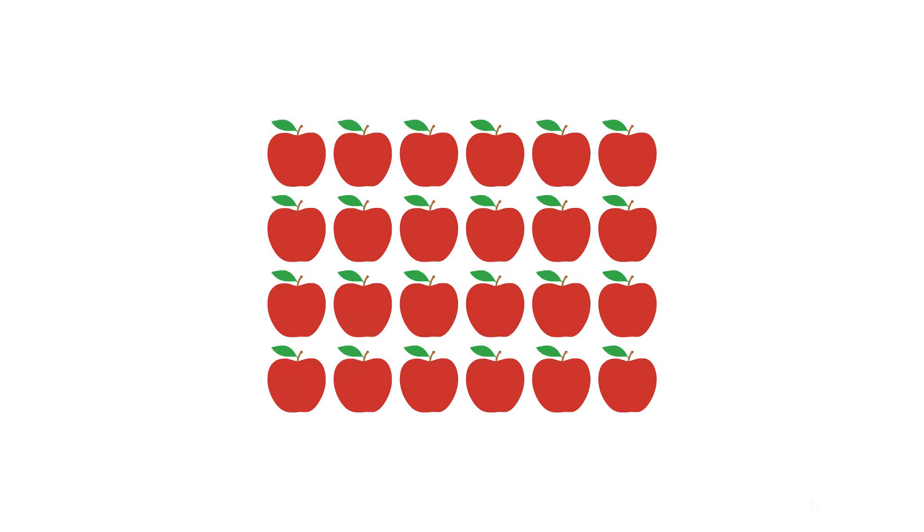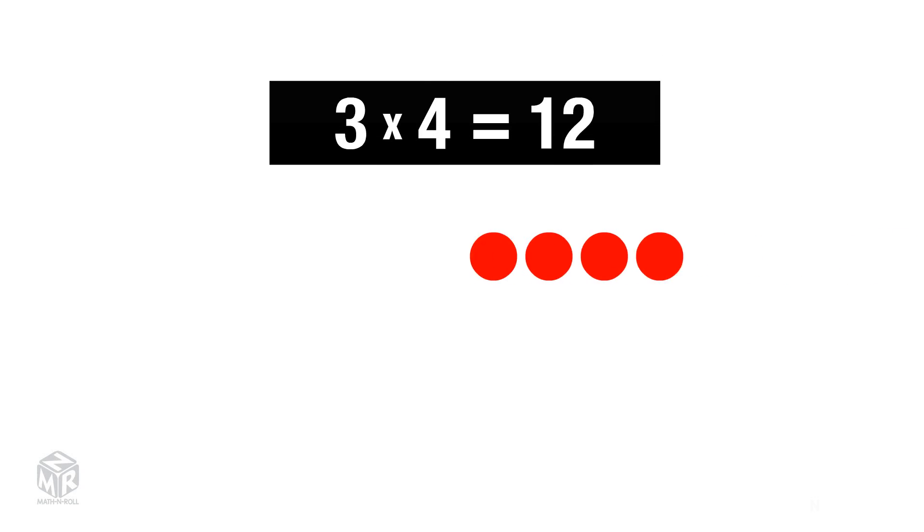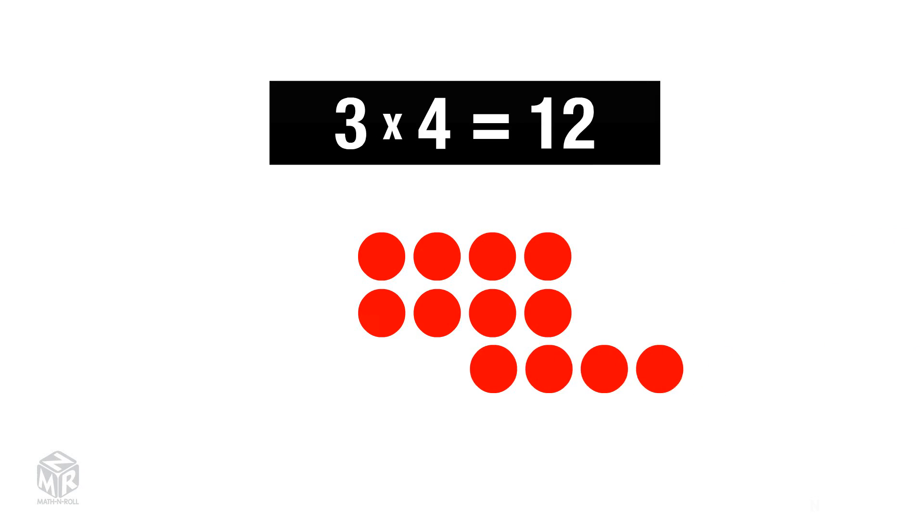Let's recall how we used arrays to show multiplication. An array uses rows and columns to show equal groups. Let's use the same example: 3 times 4 equals 12. The 3 tells us how many rows we have. The 4 tells us how many are in each row. And the 12 tells us how many we have in total.